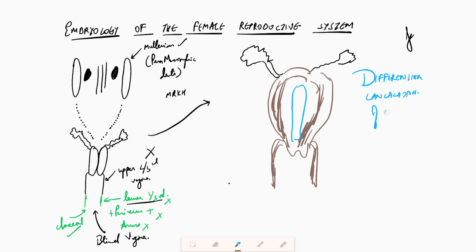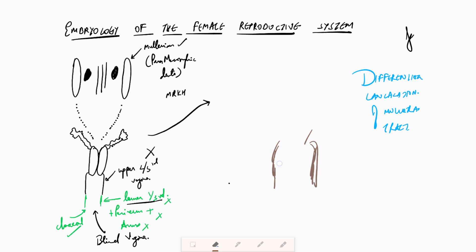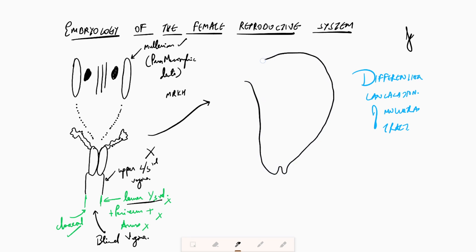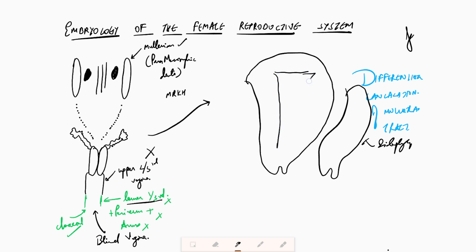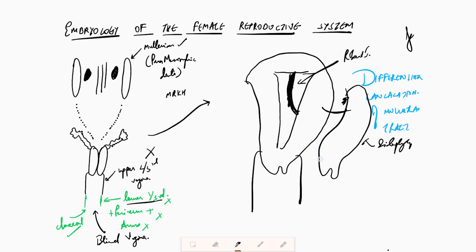Understanding differential canalization explains all Mullerian anomalies. When there is no canalization between the two uteri, you get a didelphys uterus. If the septum inside the uterus fails to canalize completely, you get a septate uterus. If two horns join but a part of the muscular fiber fails to canalize, the cavity is obliterated, giving Robert's uterus. Similarly, if one vagina canalizes but the septum between the two fails, you get OVIRA syndrome. Importantly, renal anomalies are very common in association because the kidney develops very close to the Mullerian system.